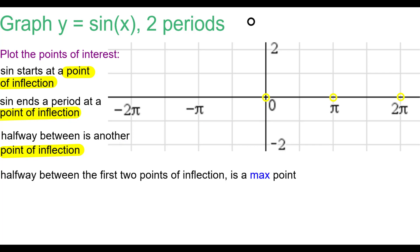Halfway between the first two points of inflection is a maximum point. Halfway between the next two points of inflection is a minimum point. And that's one period.